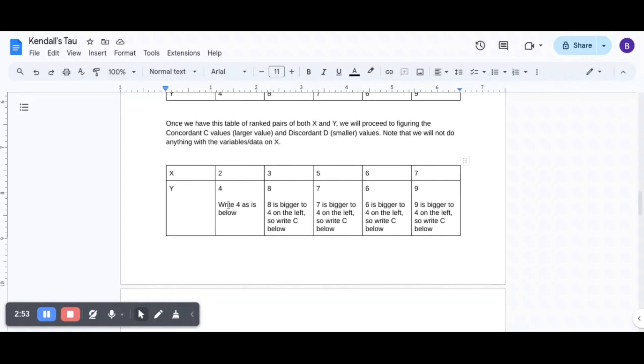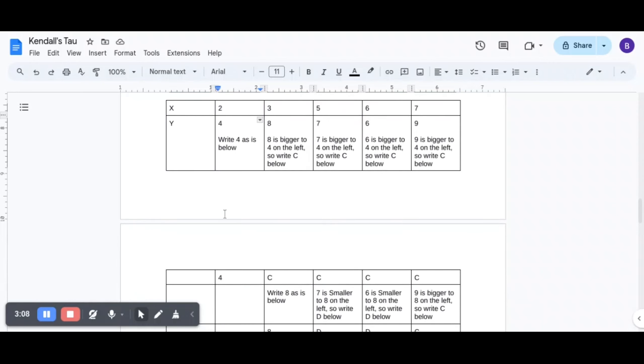Now, here you would see I have mentioned these. These are just for explanation. Okay? You will not write all of these on your exam paper. Okay? So what I have done is 4. I have mentioned here 4. Write 4 as is below.